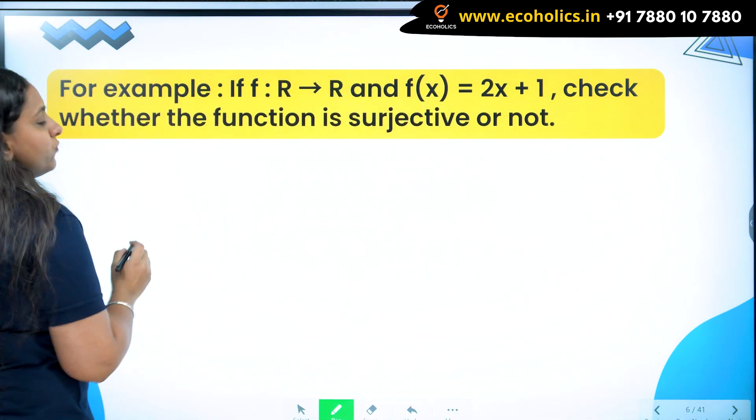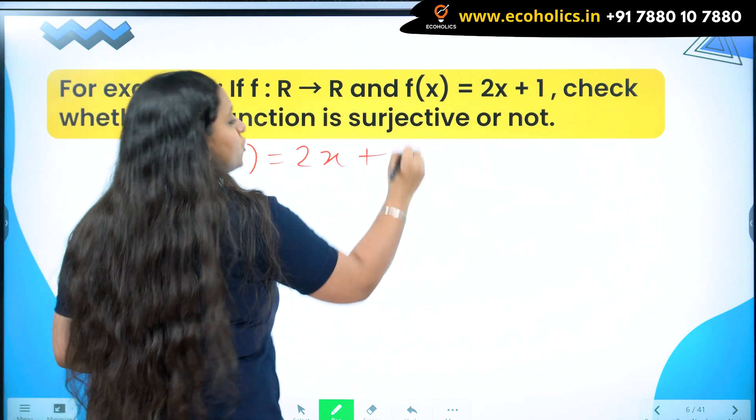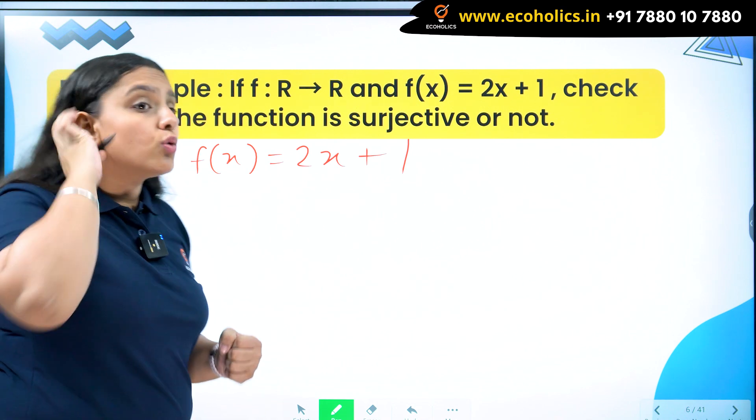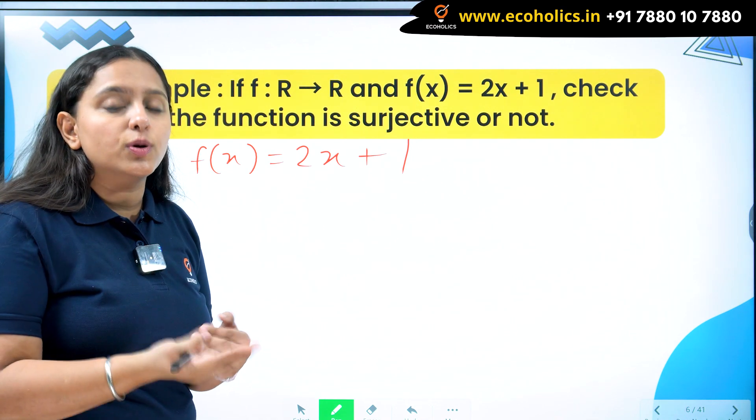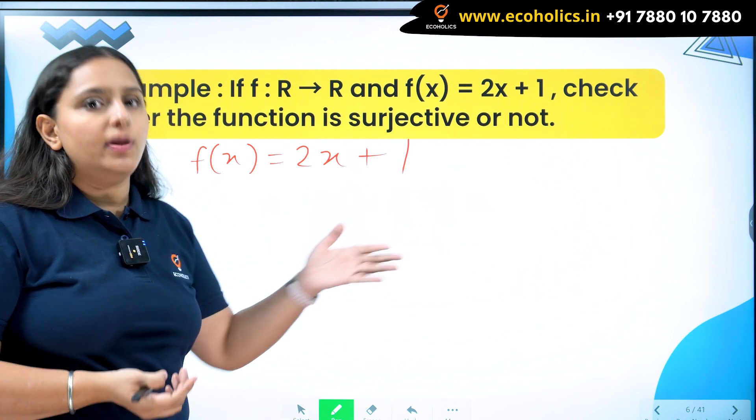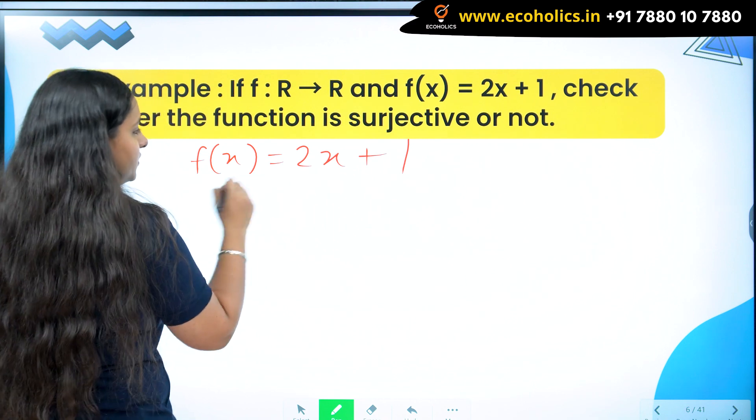This is the function I have to check. f(x) equals 2x plus 1. So if I put x, the answer I get is 2x plus 1. To convert it into inverse, because I have to check for inverse function that I should not have free element in the domain of inverse. So let's convert it.